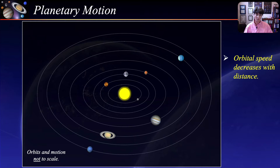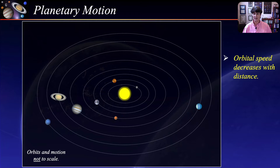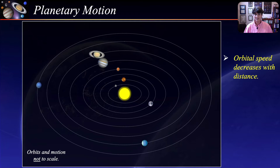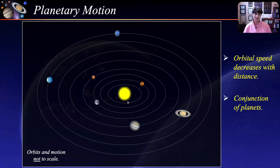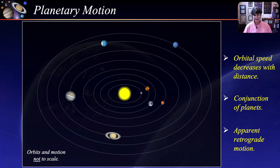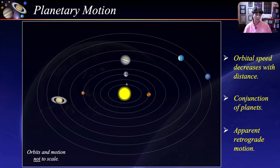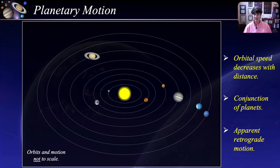For example, Mercury, the closest planet to the sun, has an orbital period of 88 Earth days, while Neptune, the farthest planet from the sun, takes 165 years to complete one revolution around the sun. Also notice that occasionally two or more planets align with each other — these alignments are called conjunctions. And as an inner planet catches up and passes an outer planet, the outer planet will appear to stop and go backward for a while as viewed against the background of stars, then continue its forward progress.